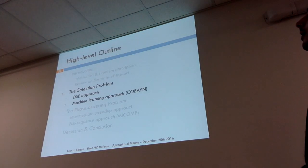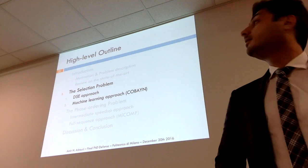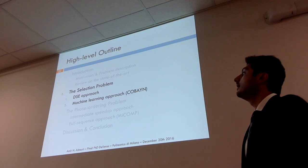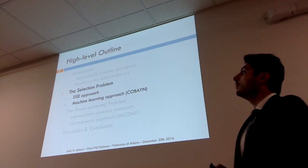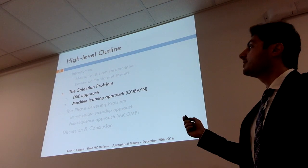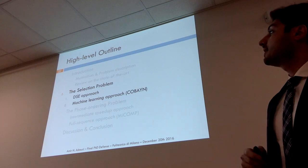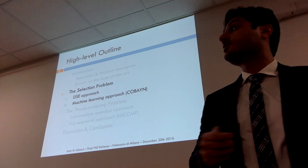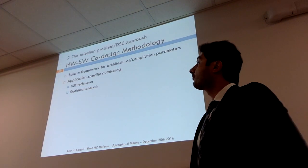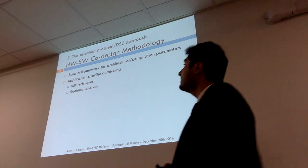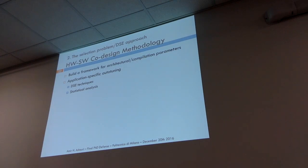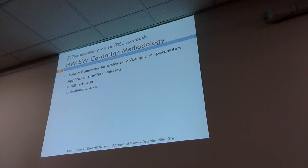Now that we know the problem and what's been done in the past 40 years, let me wrap up what I've done in the past four years. I classified my work into two methods: the selection problem and the phase ordering problem. For the selection problem I used two approaches — design space exploration methods and machine learning methods. For the design space approach, we provided a framework starting from architectural parameters with a hardware-software co-design approach.